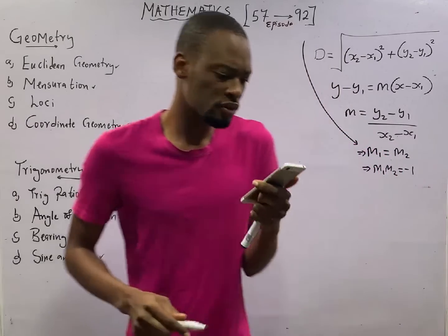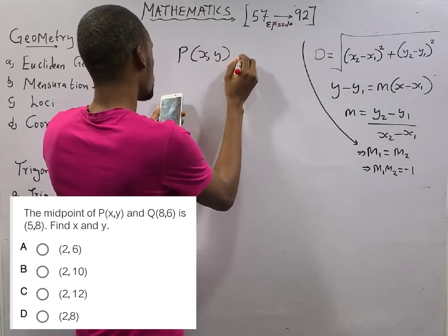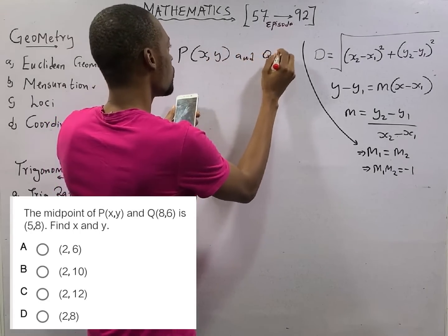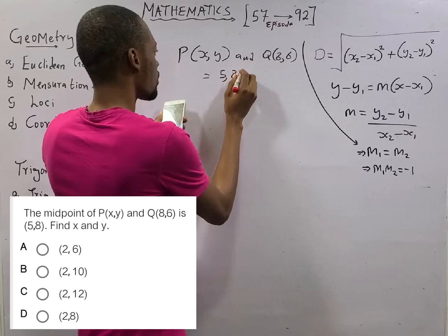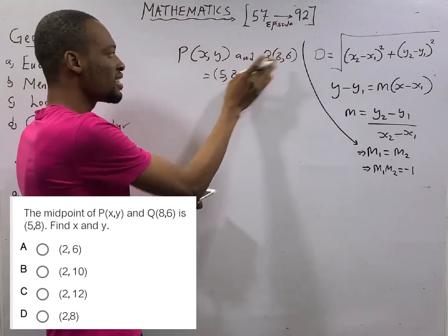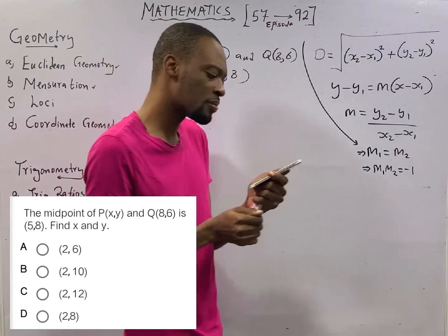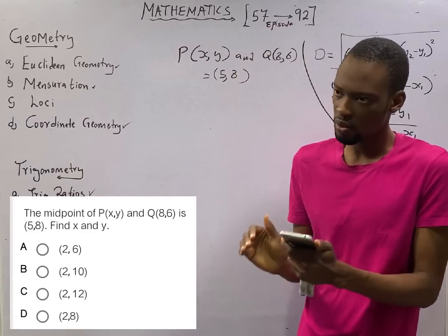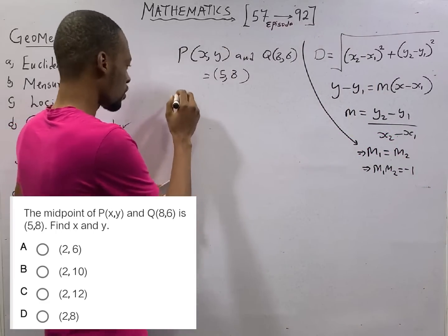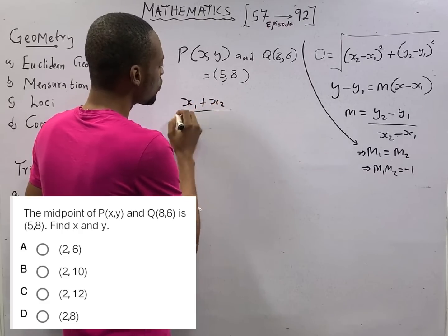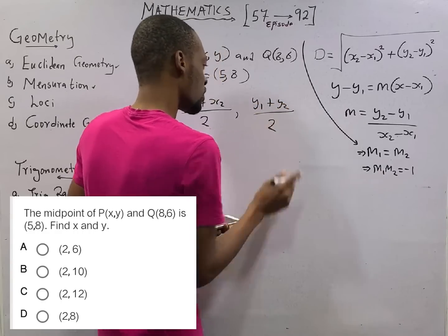The midpoint of two points P(x, y) and Q(8, 6) is (5, 8). I told you that when you see questions, attempt them one after the other. If we are given midpoint, we know that midpoint is (x₁ + x₂)/2, (y₁ + y₂)/2. This is midpoint.